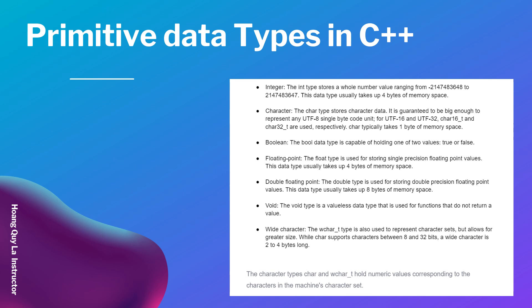The void type is a valueless data type used for functions that do not return a value. The wide character, wchar, is also used to represent character sets but allows for greater size. While char supports characters between 8 and 32 bits, a wide character is 2 to 4 bytes long. The char and wchar types hold numeric values corresponding to characters in the machine character set.